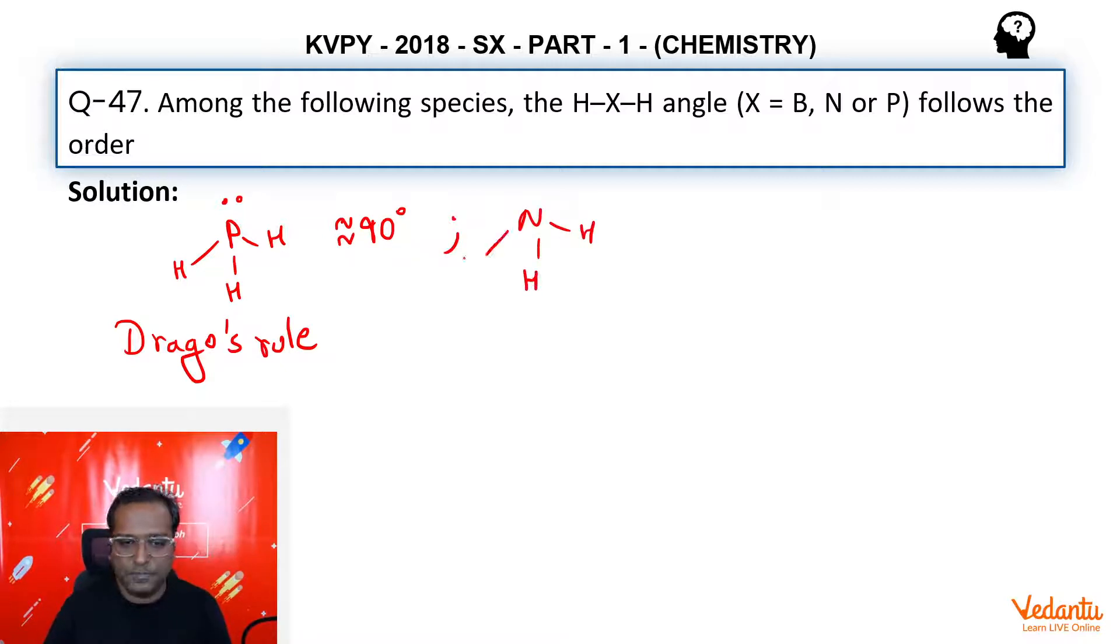In ammonia molecule, there is one lone pair, three bond pairs. So hybridization is sp3. Shape is pyramidal in nature. And due to lone pair bond pair repulsion being greater than bond pair bond pair repulsion, we see that the bond angle is roughly equal to 107 degrees.